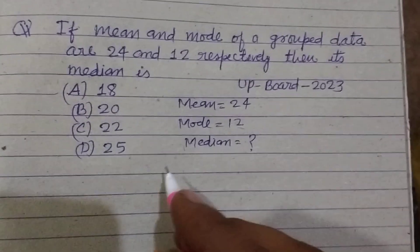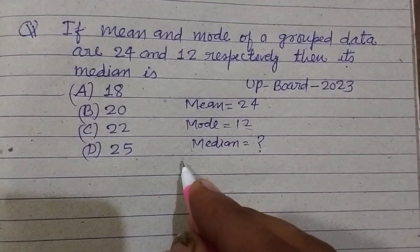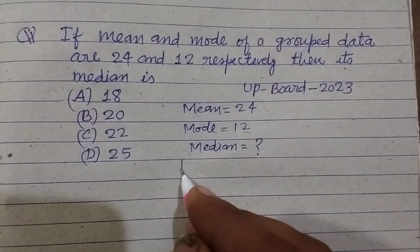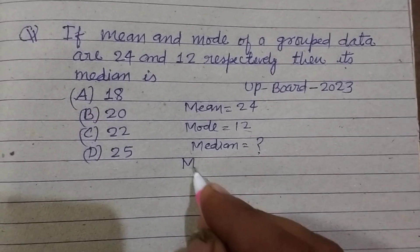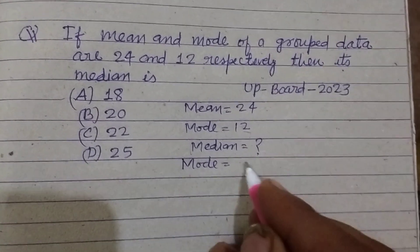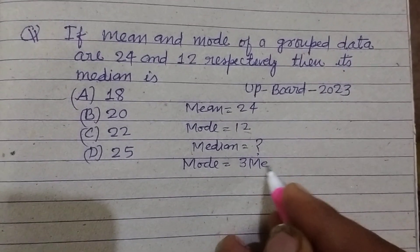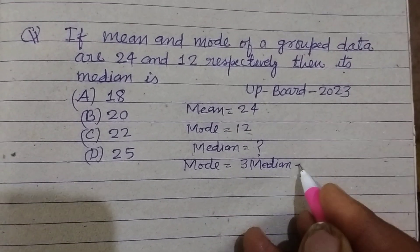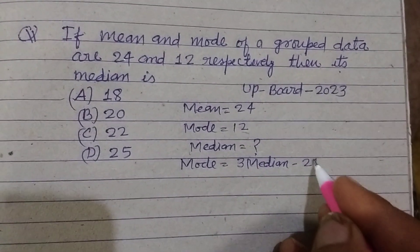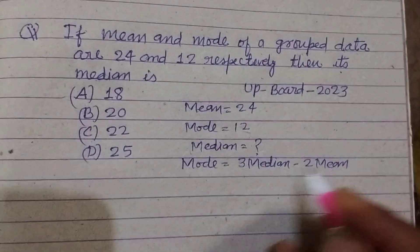The relation among mean, mode, and median is: Mode = 3 × Median − 2 × Mean.